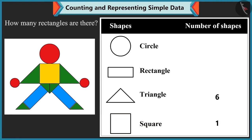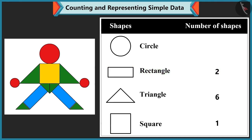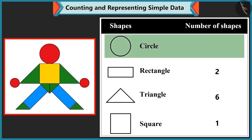Mummy asks how many rectangles there are. Bubbly counts 1, 2 — only 2 rectangles. Mummy says absolutely perfect. Then Bubbly counts the circles: 1, 2, 3 — there are 3 circles in the picture.